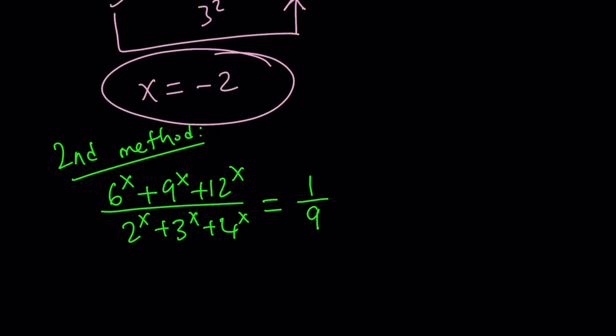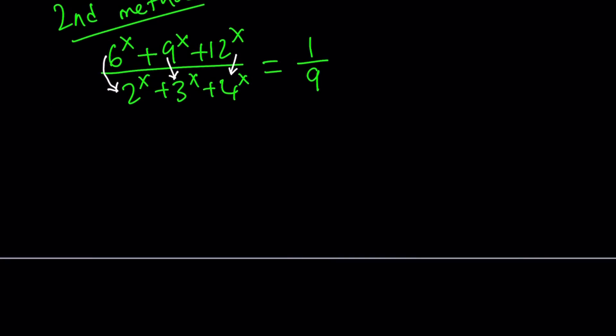If you look at the numerator and the denominator very carefully hopefully you should notice that and you can also determine this by checking the ratios so for example look at the ratio of 6 to the x to 2 to the x and that is 3 to the x. If you look at this it is also 3 to the x. If you look at this ratio it is also 3 to the power x. In other words you can write the 6 to the x as 3 to the x times 2 to the x, this one as 3 to the x times 3 to the x and this one as 3 to the x times 4 to the x.